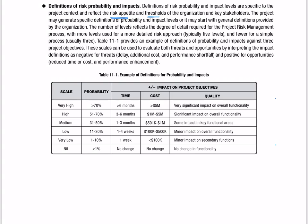So you see, a very high risk is considered if the probability of occurrence is more than 70% for a timeframe of six months project and a dollar value of $5 million. This is a very significant impact and overall functionality might get impacted, so this risk has a very, very high priority.